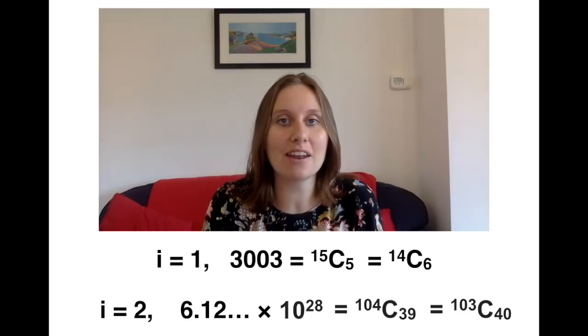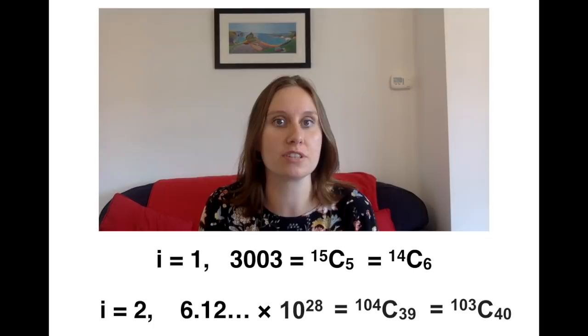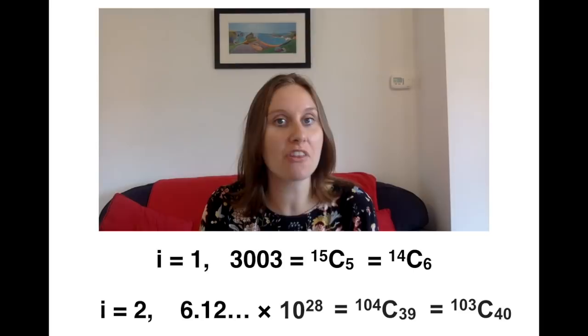We can then ask ourselves, well, do we know that there are any numbers that definitely appear more than six times? Well, actually three thousand and three appears at least eight times. But other than that, we don't know. We don't know if there are any numbers that appear more times than eight, for sure.